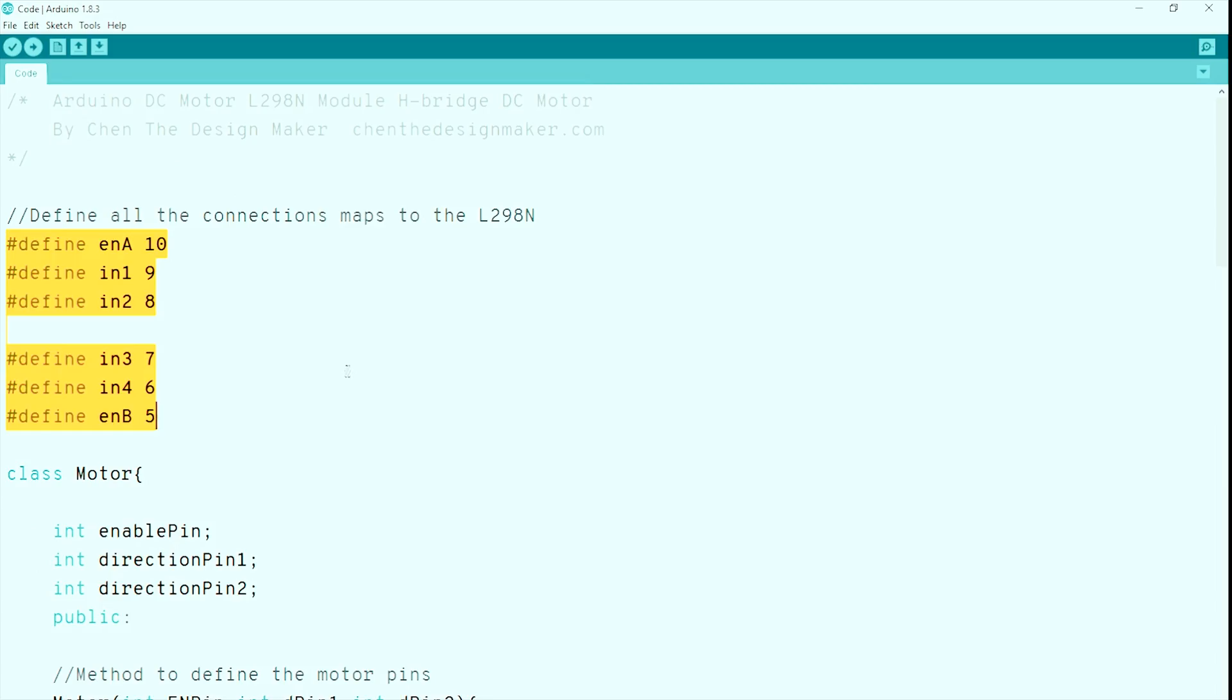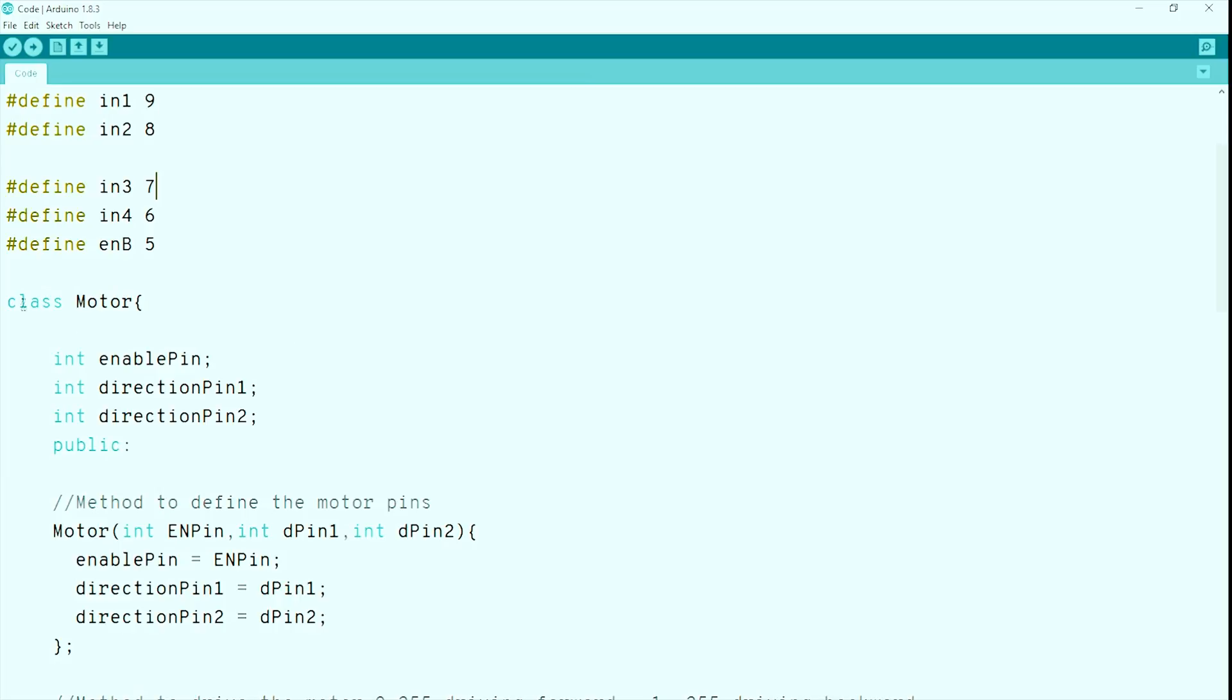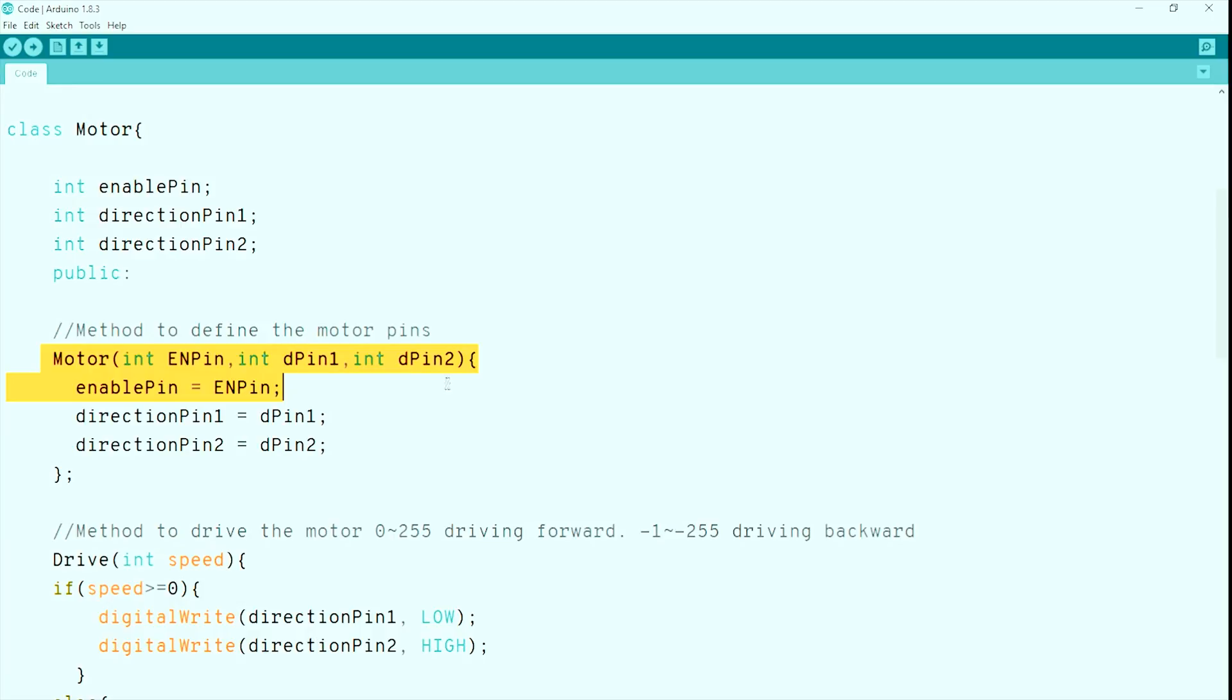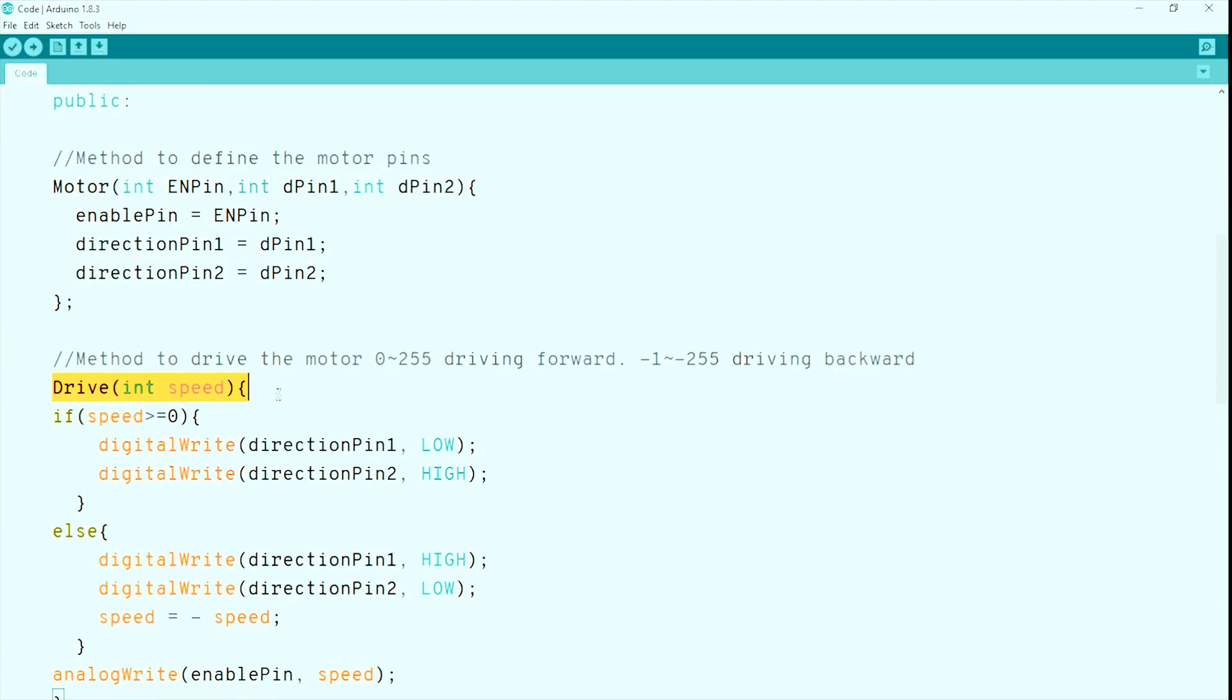Here's a simpler version. I define the motor class here that holds all the pin information. It has a drive method that takes one speed variable to drive the motor.